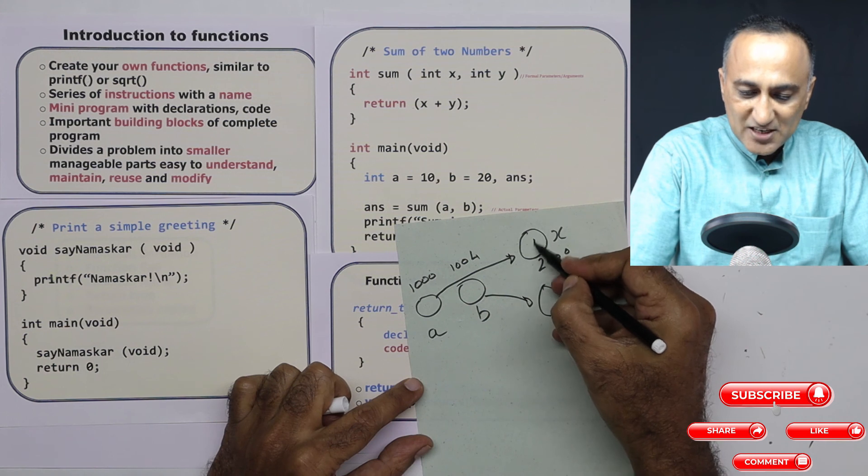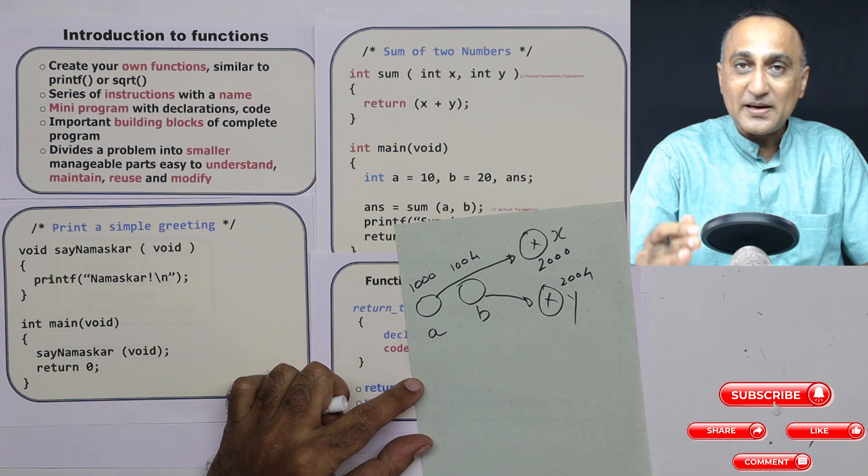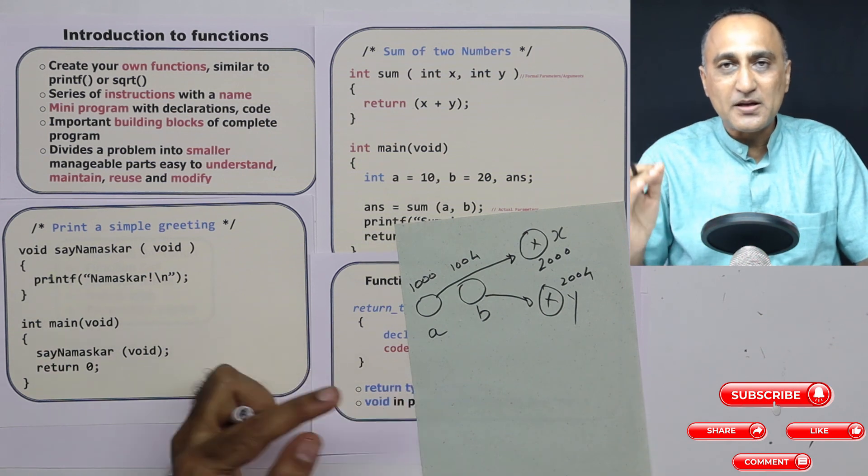So if you do any changes in x and y here, it is not going to affect a and b because a and b happen to be in different memory locations.